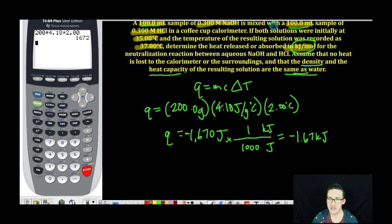And the last trick here is it's kilojoules per mole. And so as you look at your reactants here, we've got 100 milliliters of the 0.3 molar sodium hydroxide, same 100 milliliters of the 0.3 molar HCl. So we need to choose one of those and figure out how many moles we actually reacted.